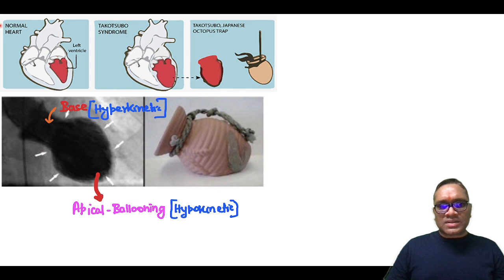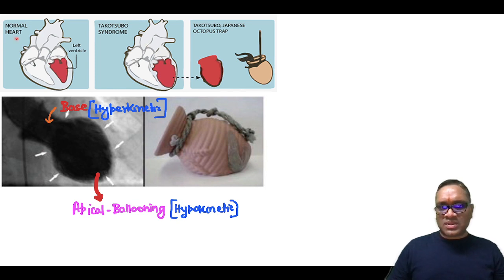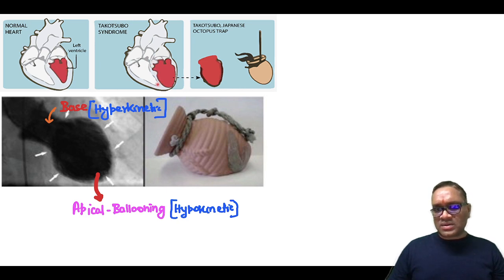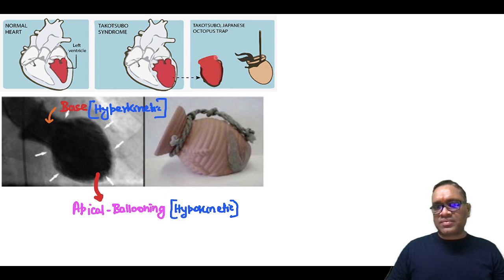You can notice this is the Takotsubo cardiomyopathy compared to the normal heart. You can see the left ventricle is normal here, and you can notice there is apical ballooning at the left ventricle. This apical ballooning of the left ventricle is looking like an octopus trap — a Japanese octopus trap which is called Takotsubo.